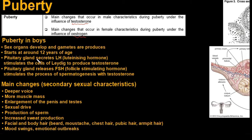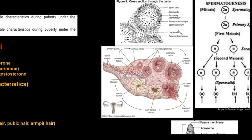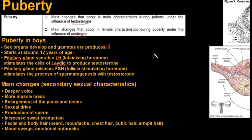Puberty in boys starts around the age of 12, and this is when the sex organs develop and gametes are produced. The pituitary gland, which sits in the brain, secretes a hormone called LH - the luteinizing hormone - and this stimulates the cells of Leydig to produce testosterone. The cells of Leydig sit in between the seminiferous tubules and they are the ones that secrete testosterone.